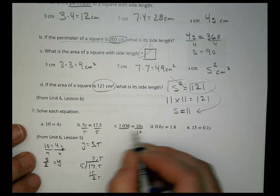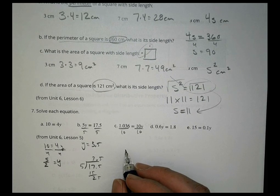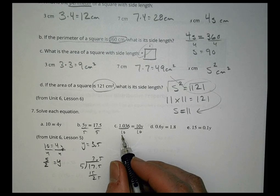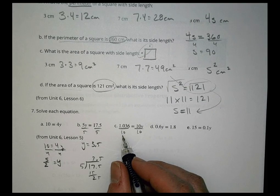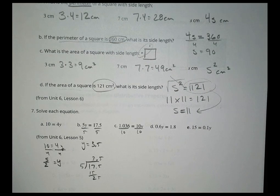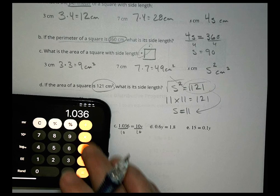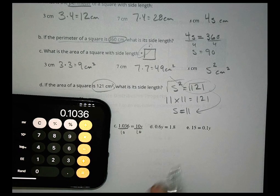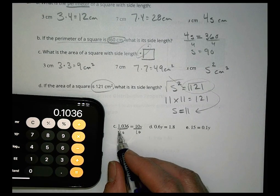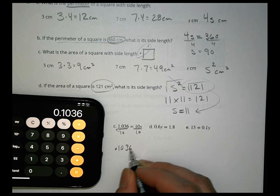Next one, we're going to divide both sides by 10. 1.036 divided by 10. What's going to happen to our decimal? It just slides over one spot. So it's going to move that way one spot. So it gets 0.1036 equals y.